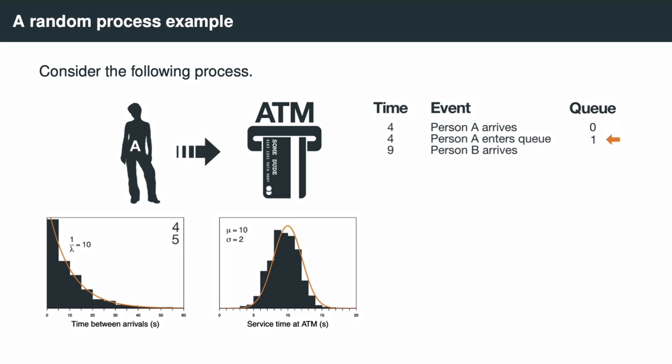The queue tally is updated to 1, and this event triggers the next event: Person A leaving the queue, which will happen at time 4 because there's currently nobody else in the queue. The simulation takes the next event in the list, which is Person A leaving the queue, and when executing that event it updates the tally for the queue back to 0.